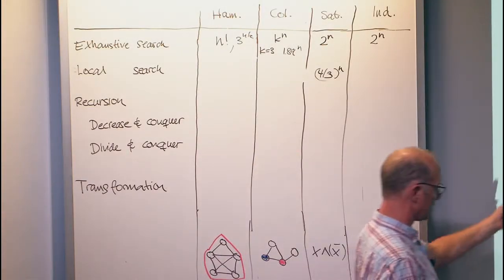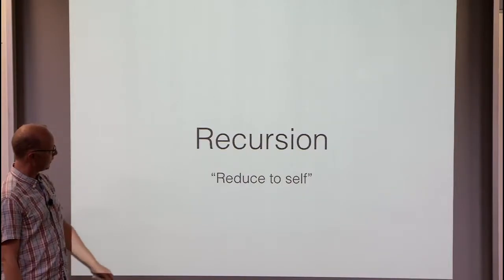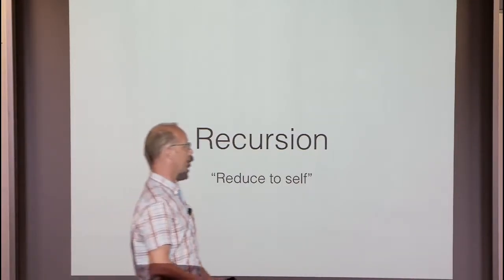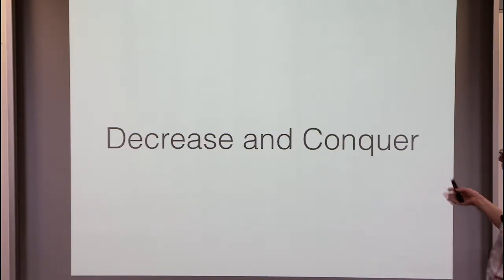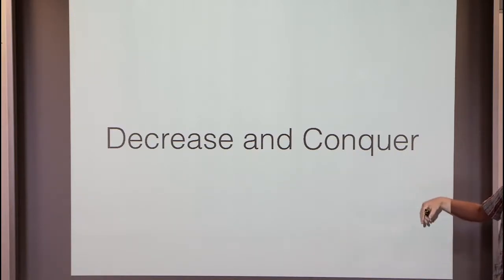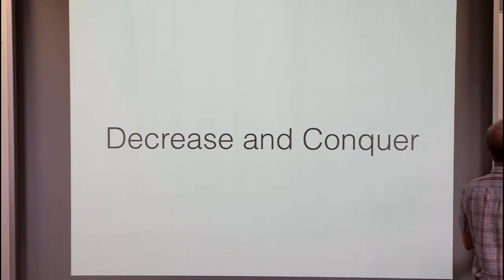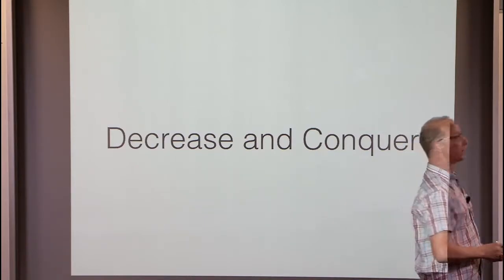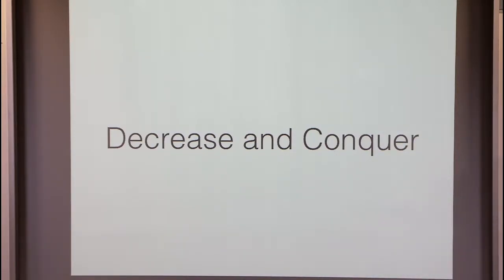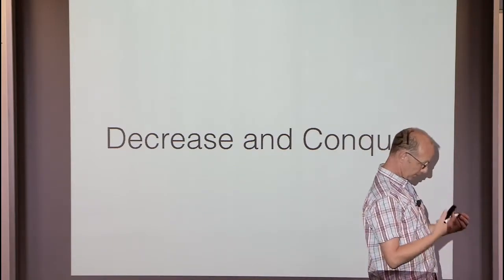Recursion is a known algorithmic technique — maybe the most important one we have — where we reduce a problem to a version of the same problem, typically for a smaller instance of the graph. This comes in two flavors: decrease and conquer and divide and conquer. Decrease and conquer is like insertion sort, and divide and conquer is like merge sort. Decrease and conquer is: you want to sort all of these, and you do that by finding the largest element and then recurring on n-1 of them. Divide and conquer is: you split it into two and then recur on those two.